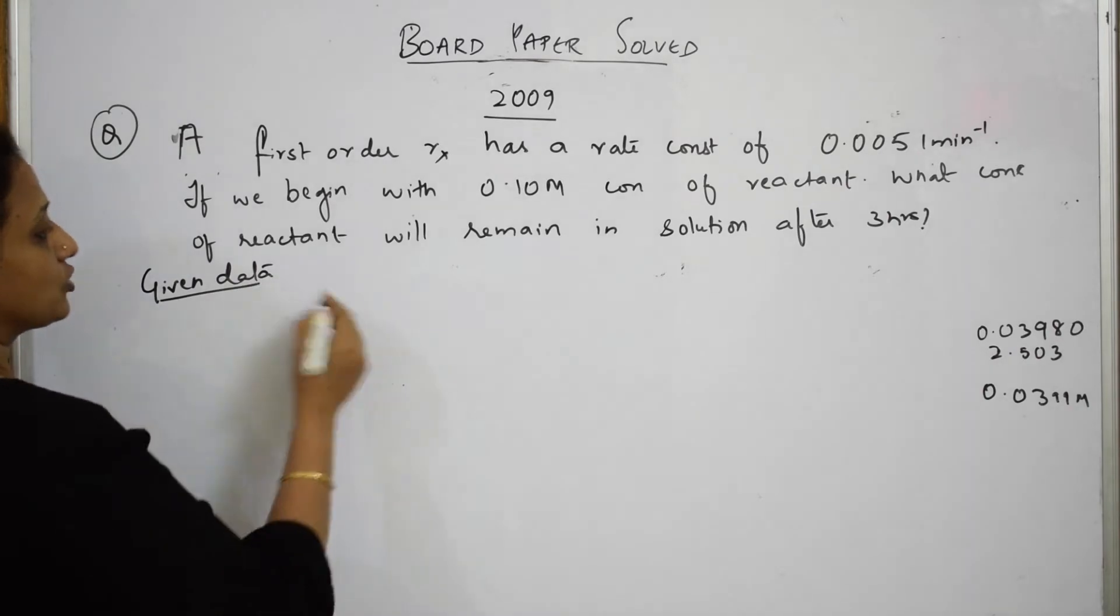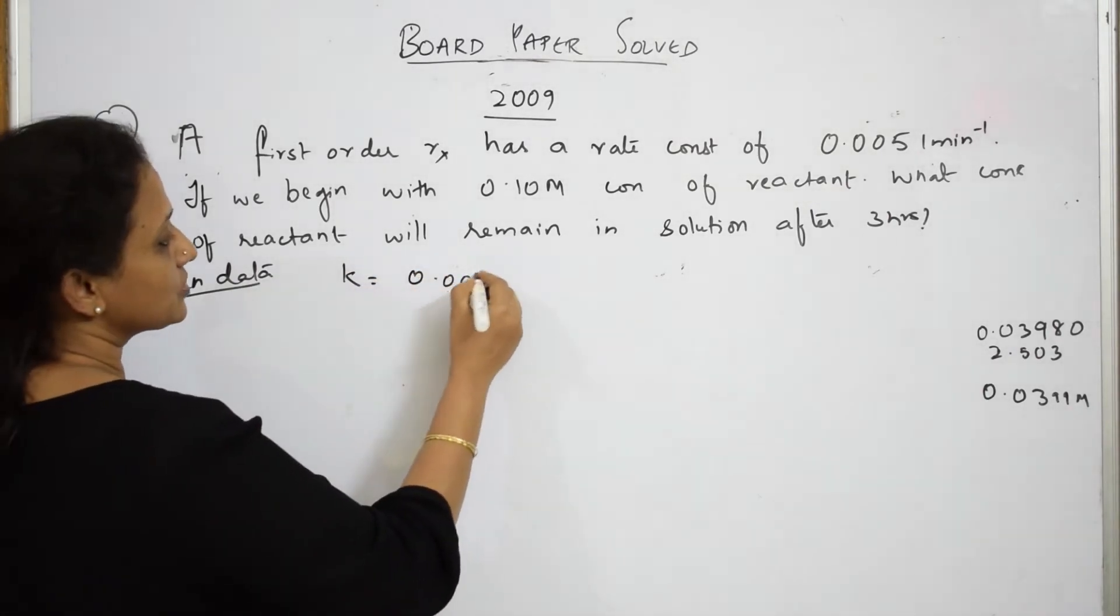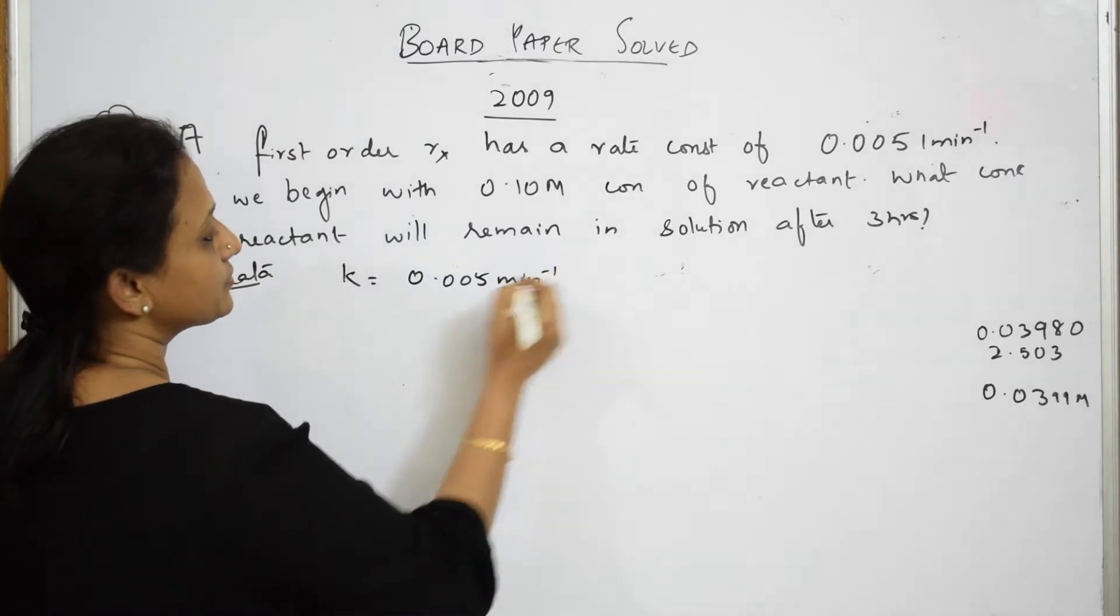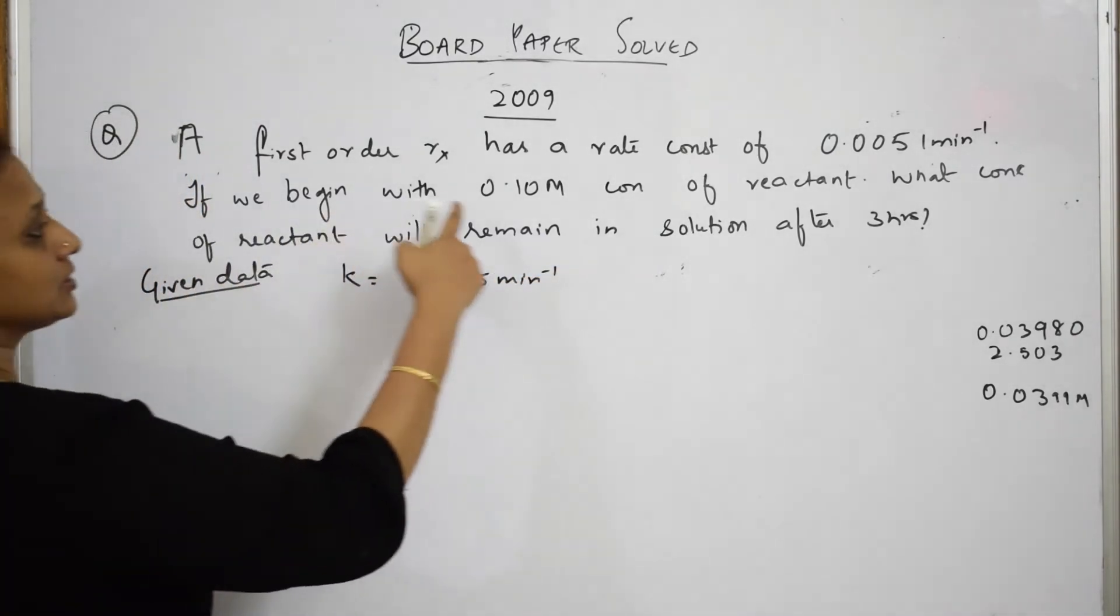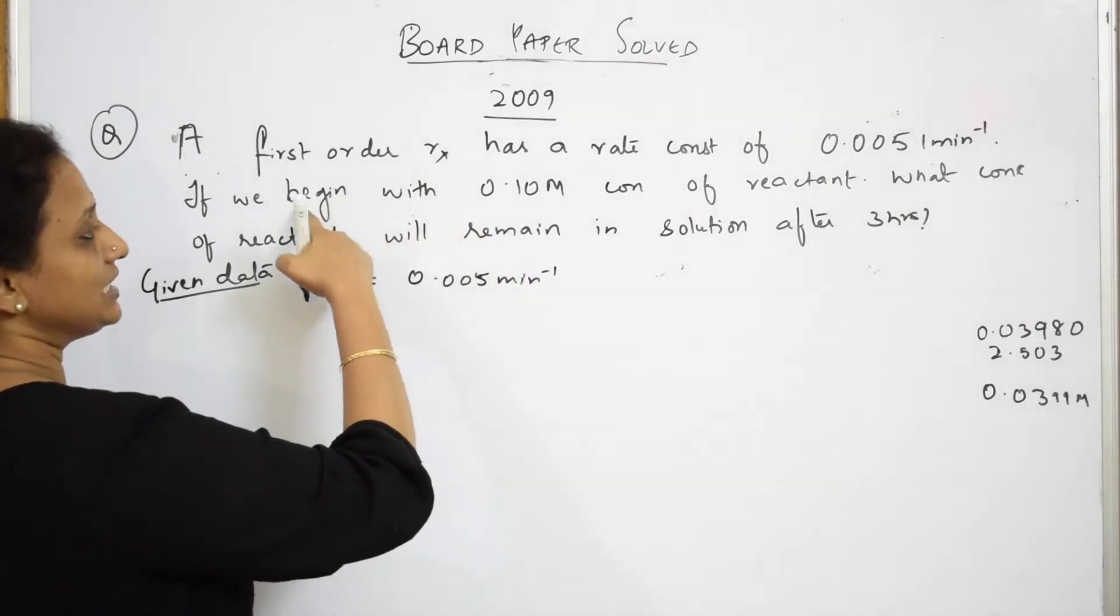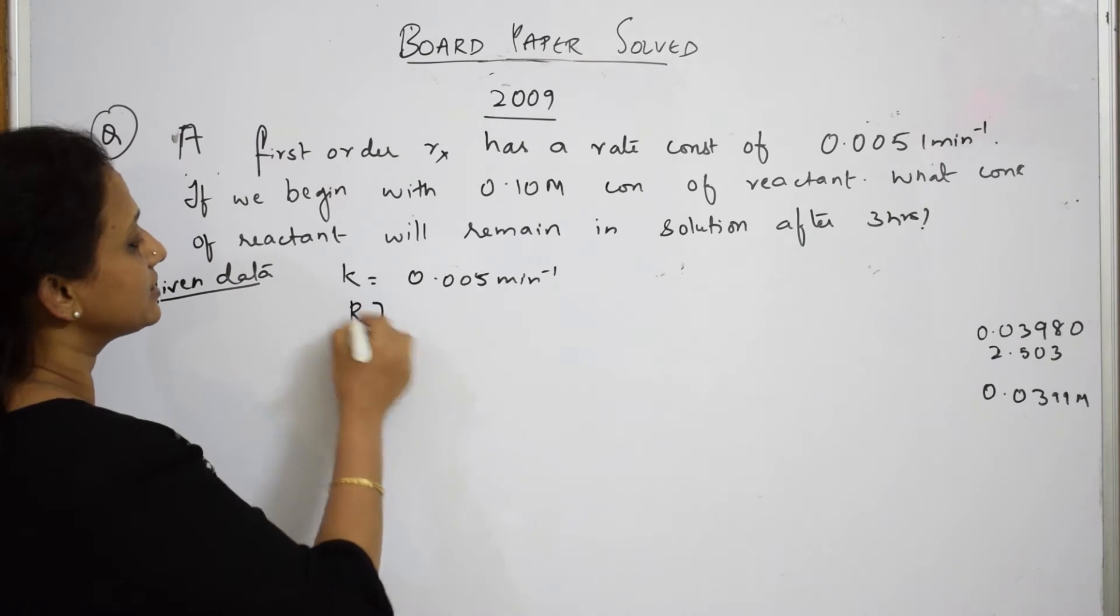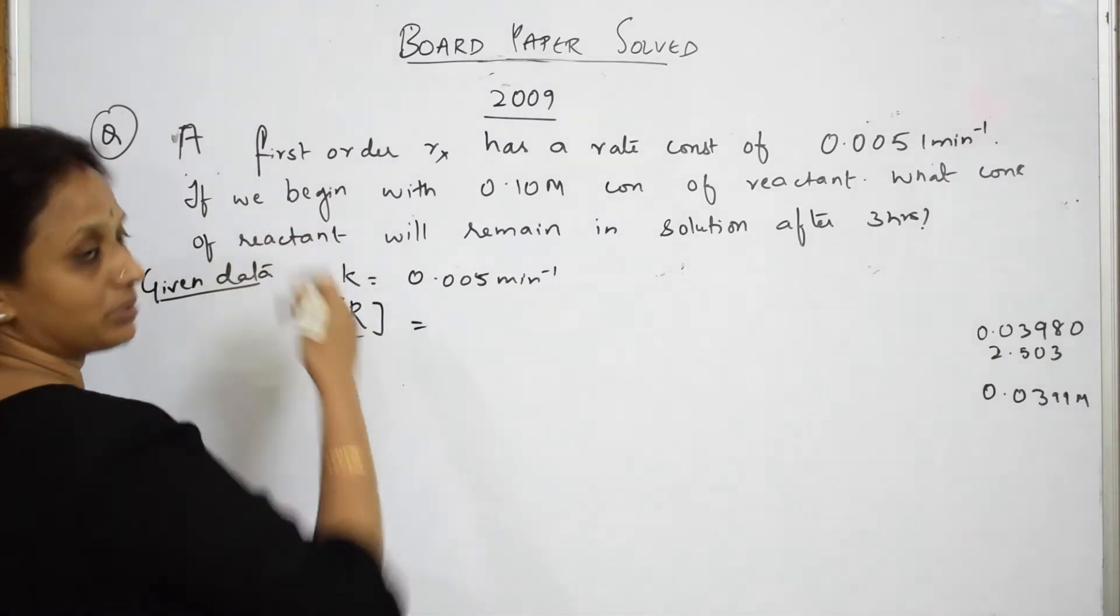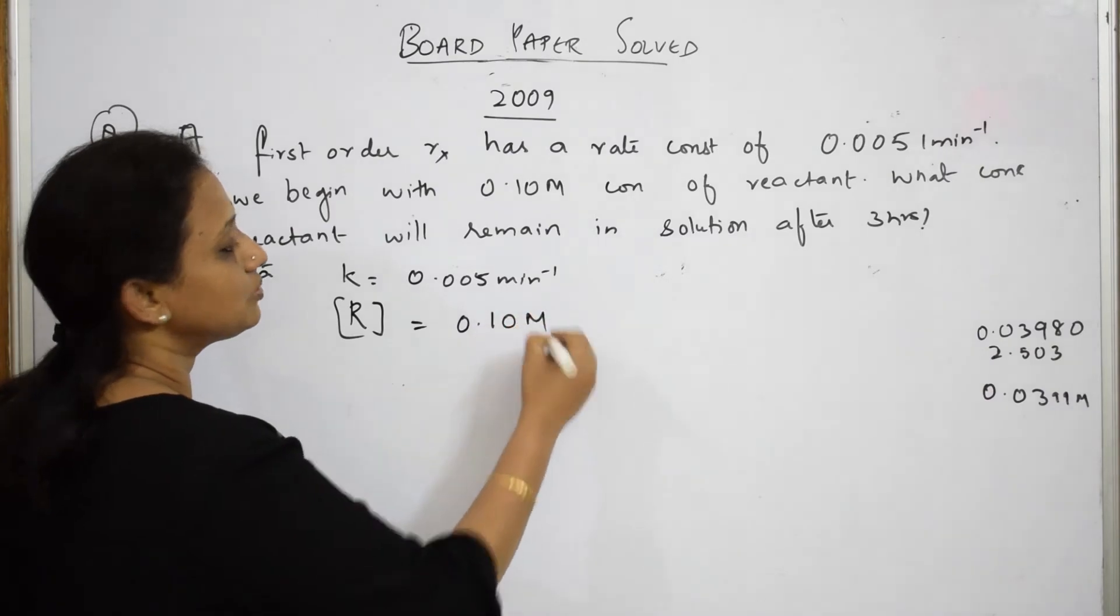First of all, the reaction has a rate constant. Let us write the given data. What is given to us? Rate constant K is represented by K. This is minute inverse, which is a unit for first order rate. After that, if we begin with the initial concentration of R, the reactant, they have written it as we begin with, so the initial concentration of R is given as 0.10 molar.